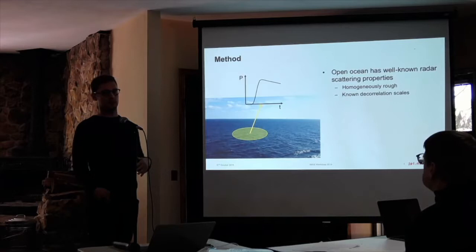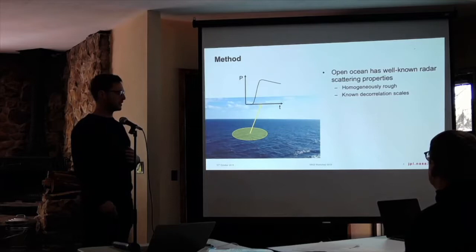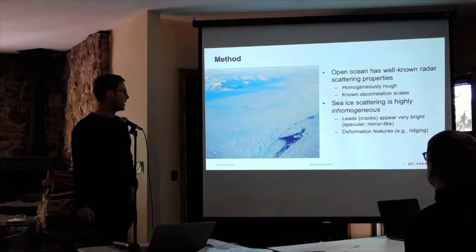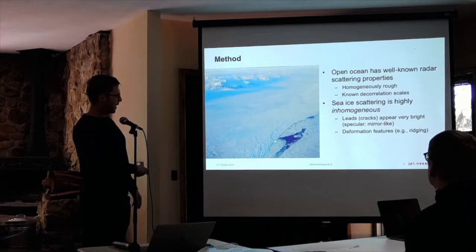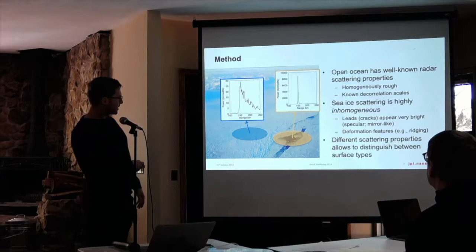That's because the global open ocean has pretty well known scattering properties for the radar — it's homogeneously rough at the scale of the radar footprint and has known decorrelation scales. This basically means you can capture the surface height of the ocean relatively easily. Sea ice is not homogeneous; it's highly inhomogeneous. You get cracks that appear that are very bright to the radar, whereas the surrounding sea ice is very dull.